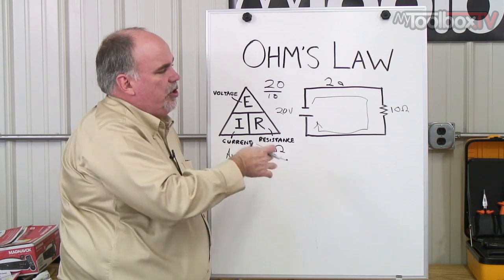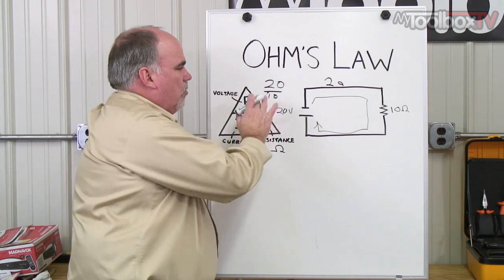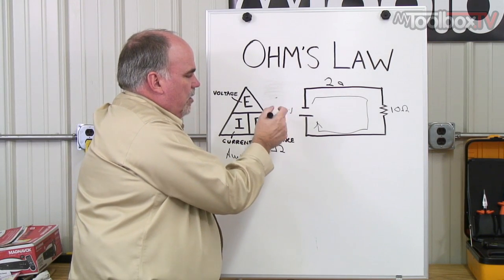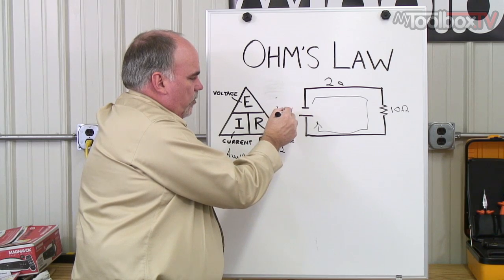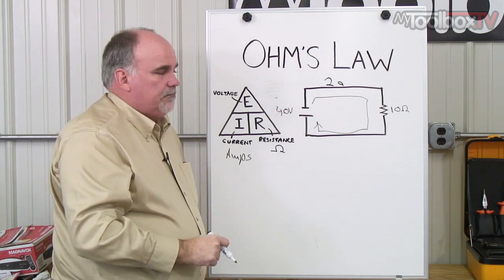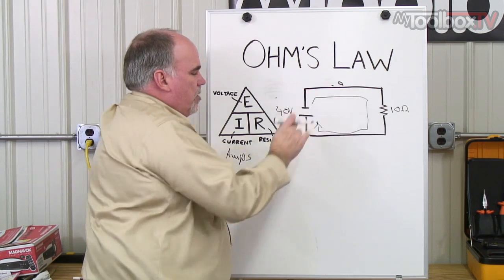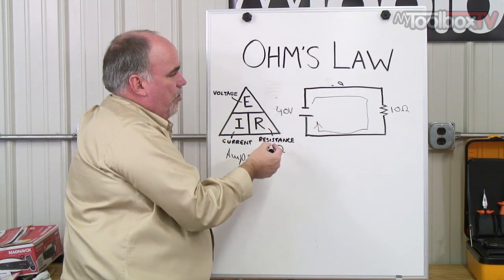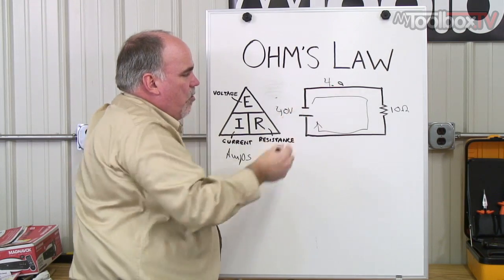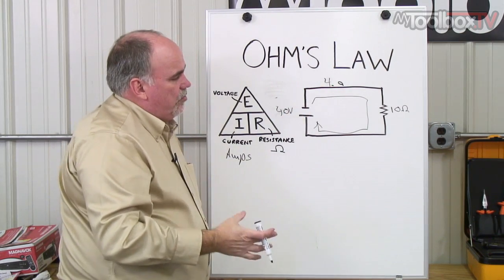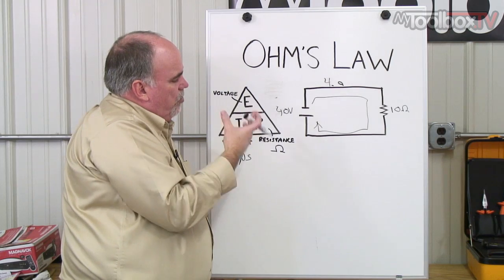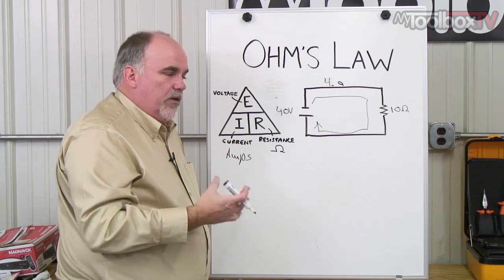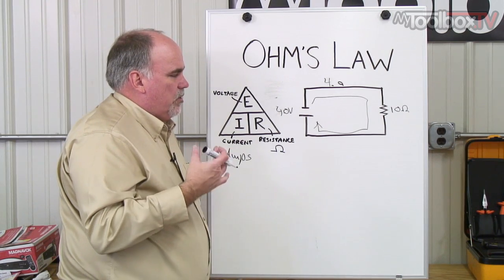Now, let's change one of the fundamental quantities. Let's say that we increase the voltage to 40 volts. We leave resistance the same. What happens to current? Well, now at 40 volts divided by 10 ohms, now we're looking at 4 amps instead of the 2. So use Ohm's law to help you understand the relationship between the fundamental quantities, because that's what's really important.